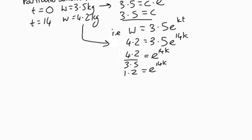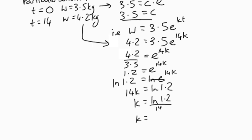Solve that, divide through by 3.5, and we're going to take a log. 4.2 divided by 3.5 is 1.2. We're going to use logs to solve this. 14k is the log of 1.2, so k is the log of 1.2 divided by 14. k works out as 0.013 to 3 decimal places.